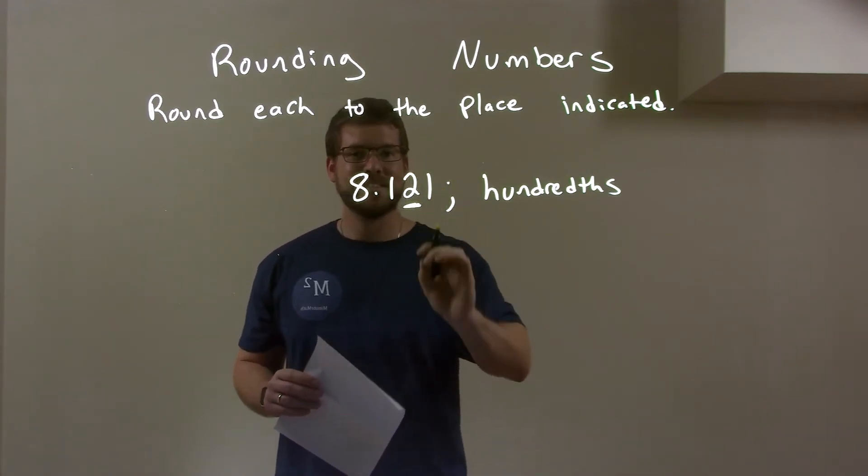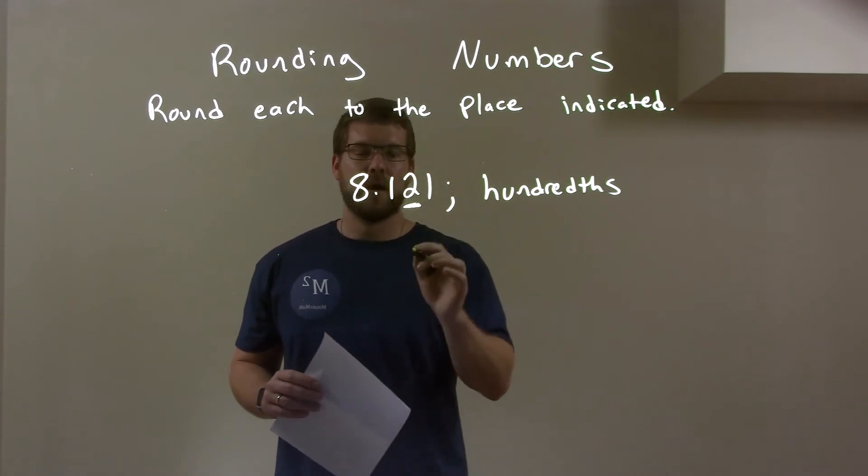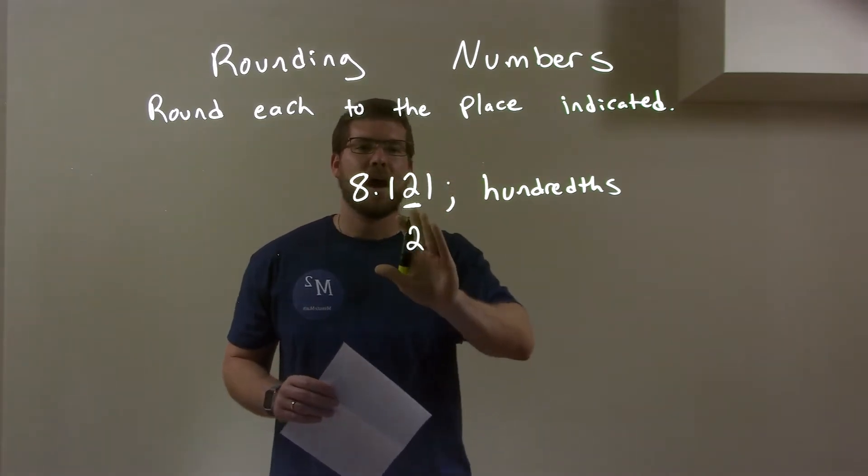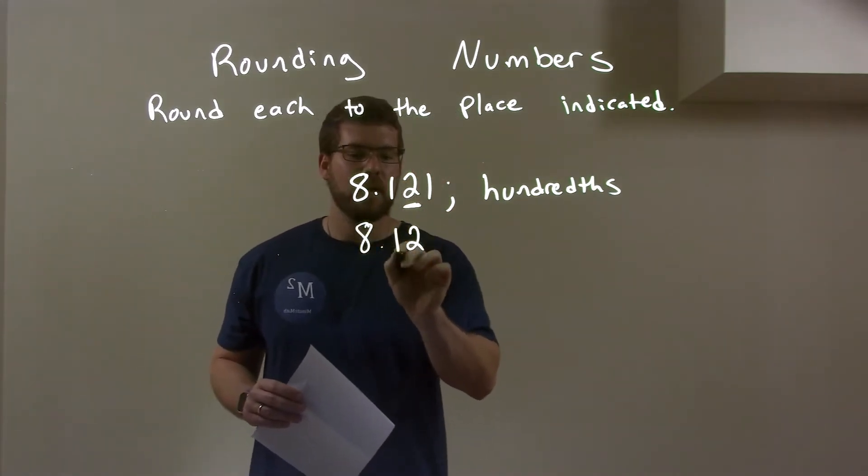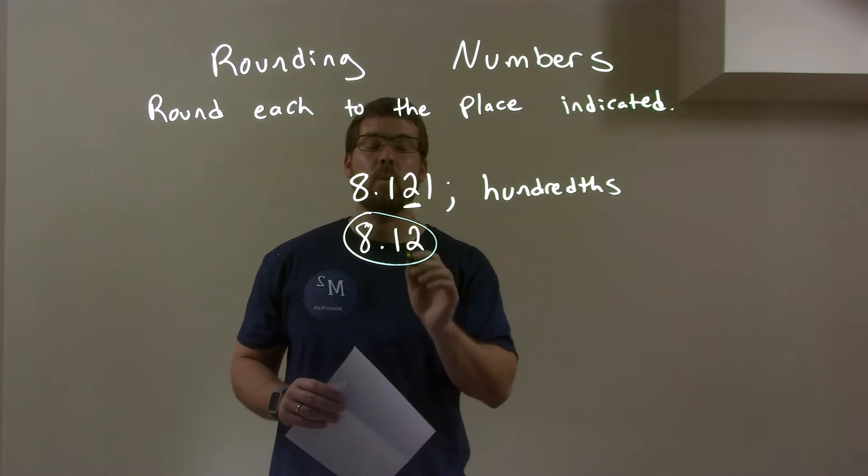The 1 is between 0 and 4. That causes us to round down. The 2 stays the same. I don't write anything to the right here, okay? I bring down the 8.1, and now we have our final answer of 8.12.